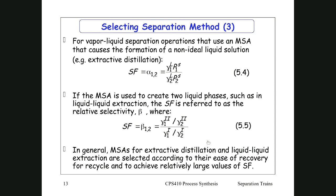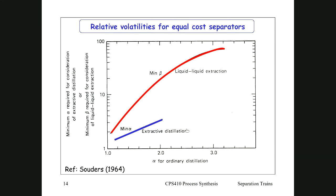The next slide shows equal cost separators — a graph comparing whether to use liquid-liquid extraction, extractive distillation, or ordinary distillation. For example, with extractive distillation your minimum alpha should be around 2 to 3.5, and for liquid-liquid extraction your separating factor should be around 20. We'll carry on from this lecture at the next lecture. I'm going to switch off the recording now.